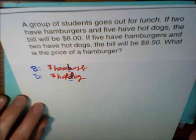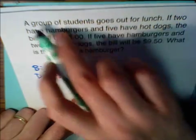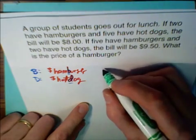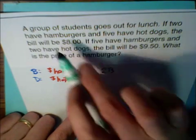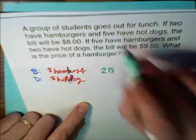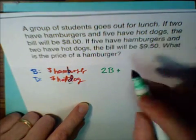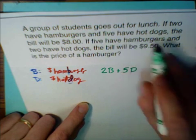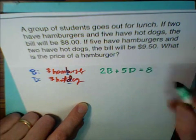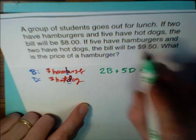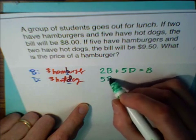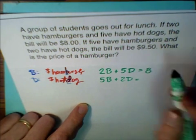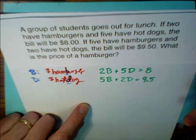Step three is to write equations. The first sentence just tells us they're going out to lunch. If two have hamburgers — two times the cost of a burger, two B — plus five have hot dogs — five times the cost of a dog, five D — the bill will be $8: two B plus five D equals eight. If five have hamburgers and two have hot dogs, the bill will be $9.50.